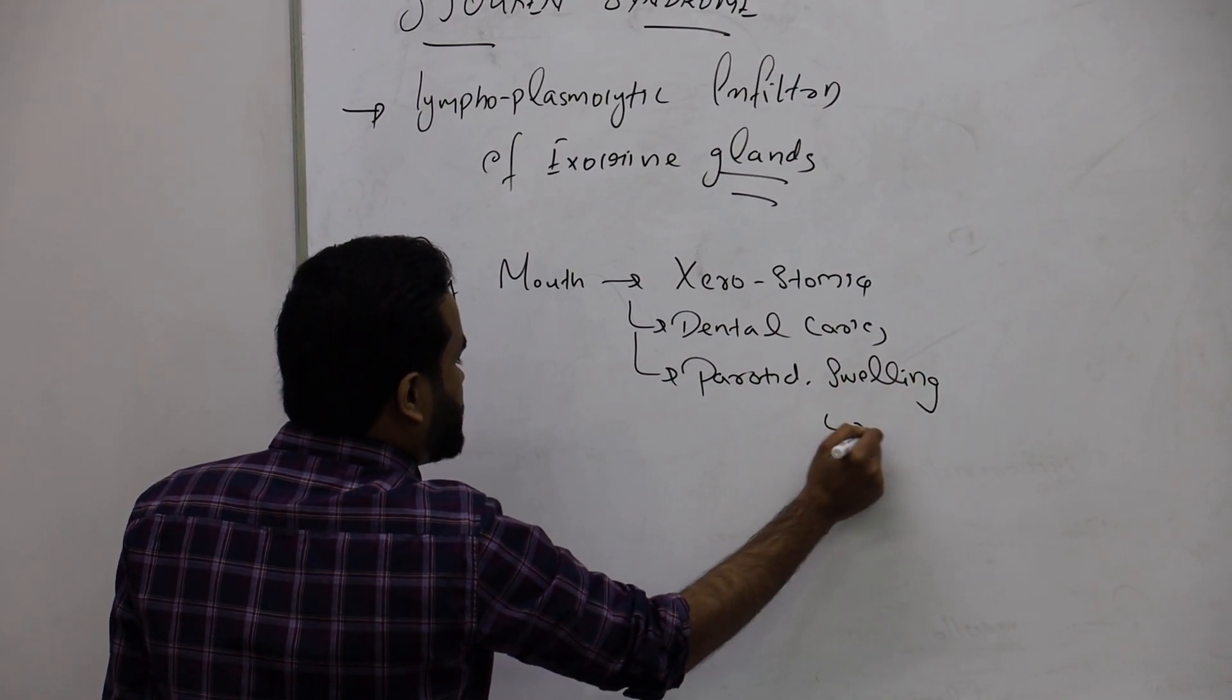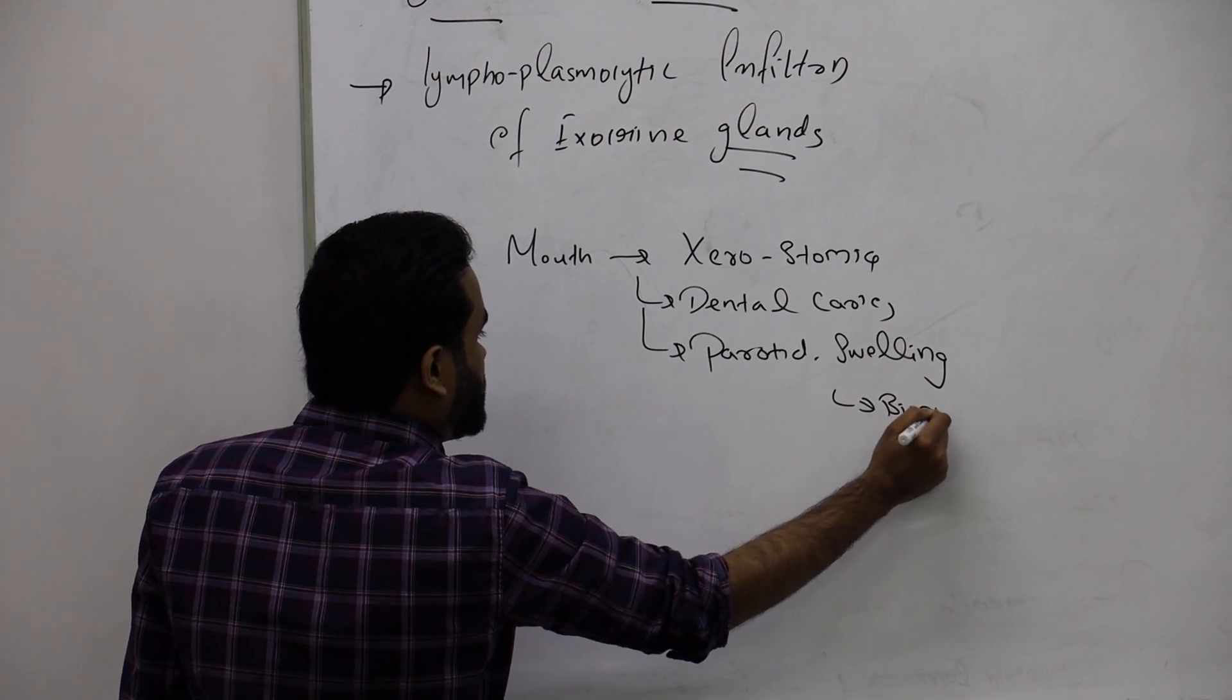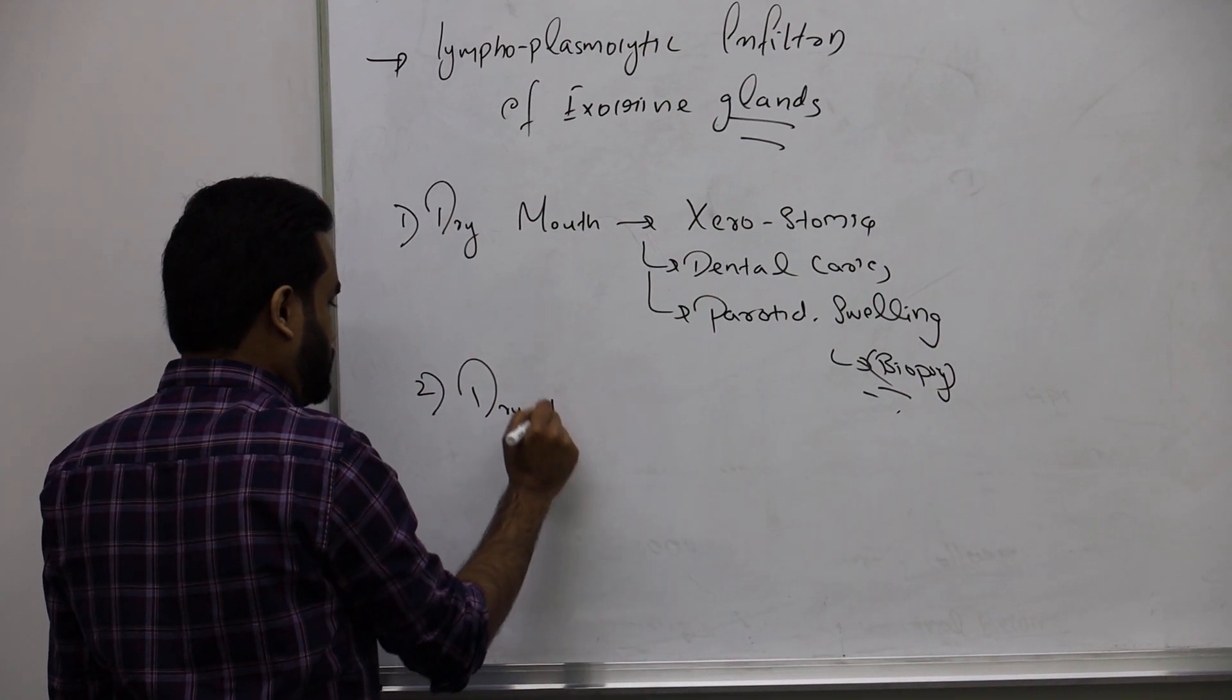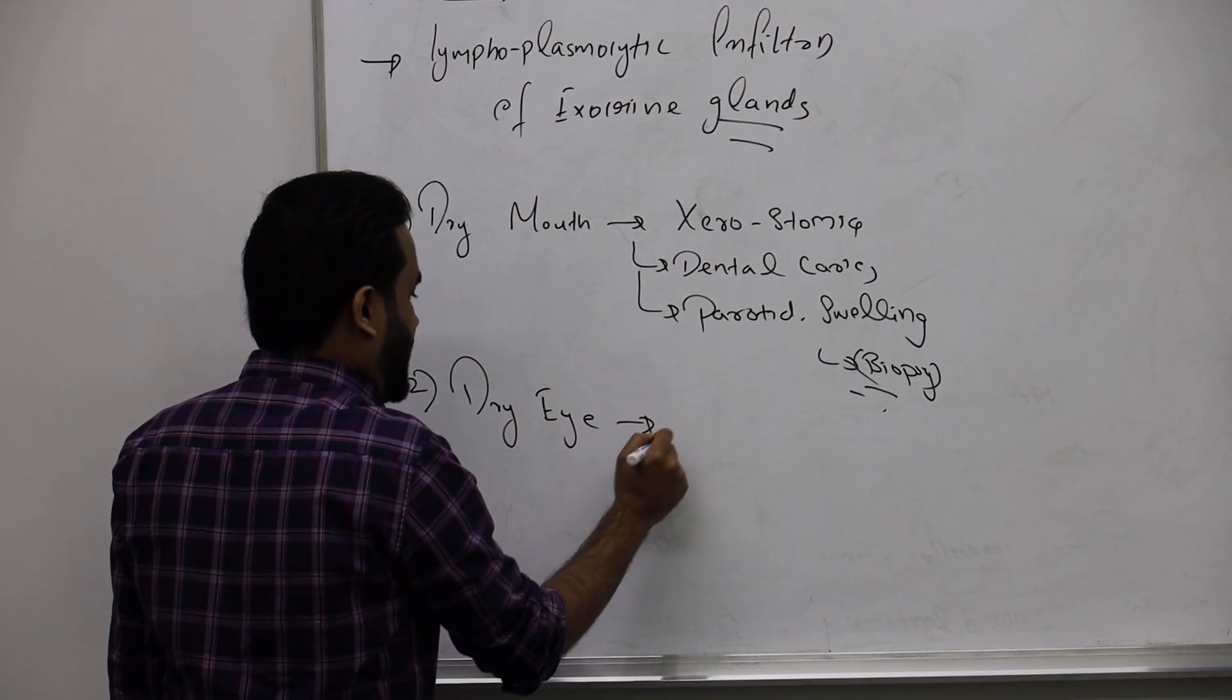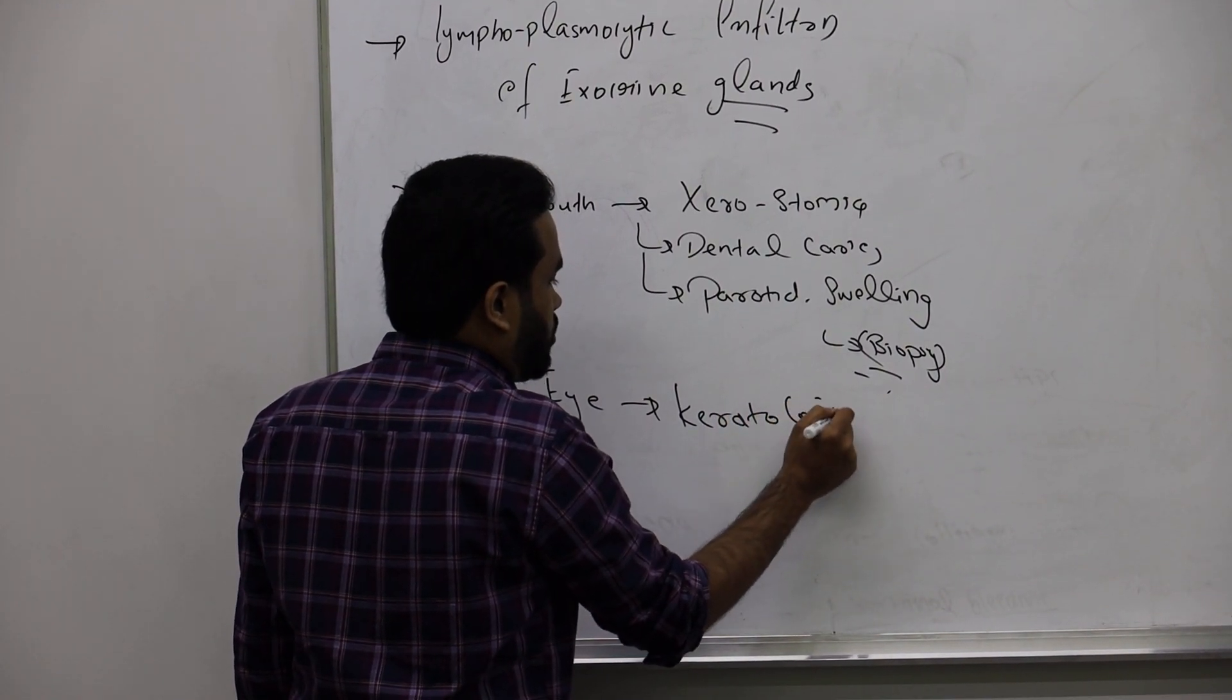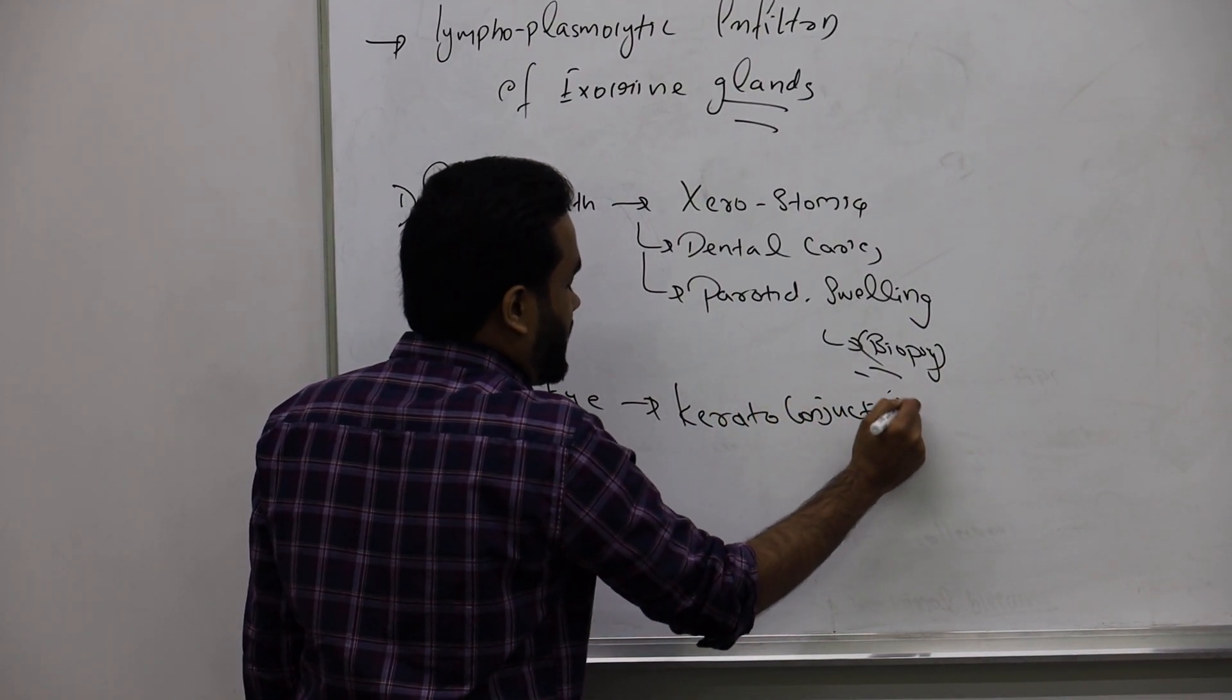So you do a biopsy to confirm it, you will see antibody. Then they will have dry eye, we call it as keratoconjunctivitis sicca.